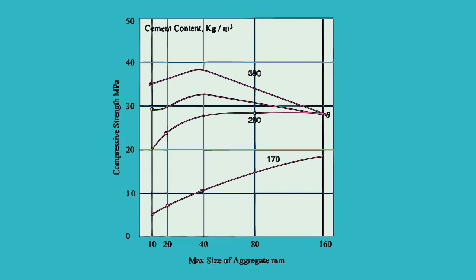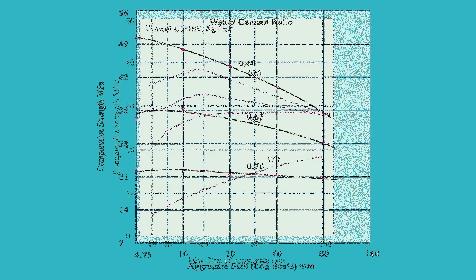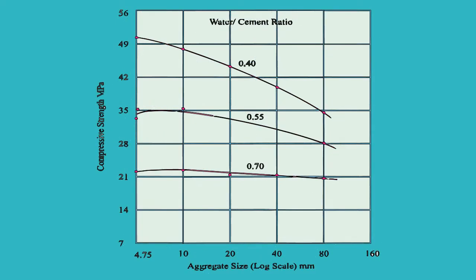The influence of the maximum size of aggregate on compressive strength of concrete is shown in the graph. The graph represents the influence of the size of aggregate on the compressive strength of concrete for different water-cement ratios.